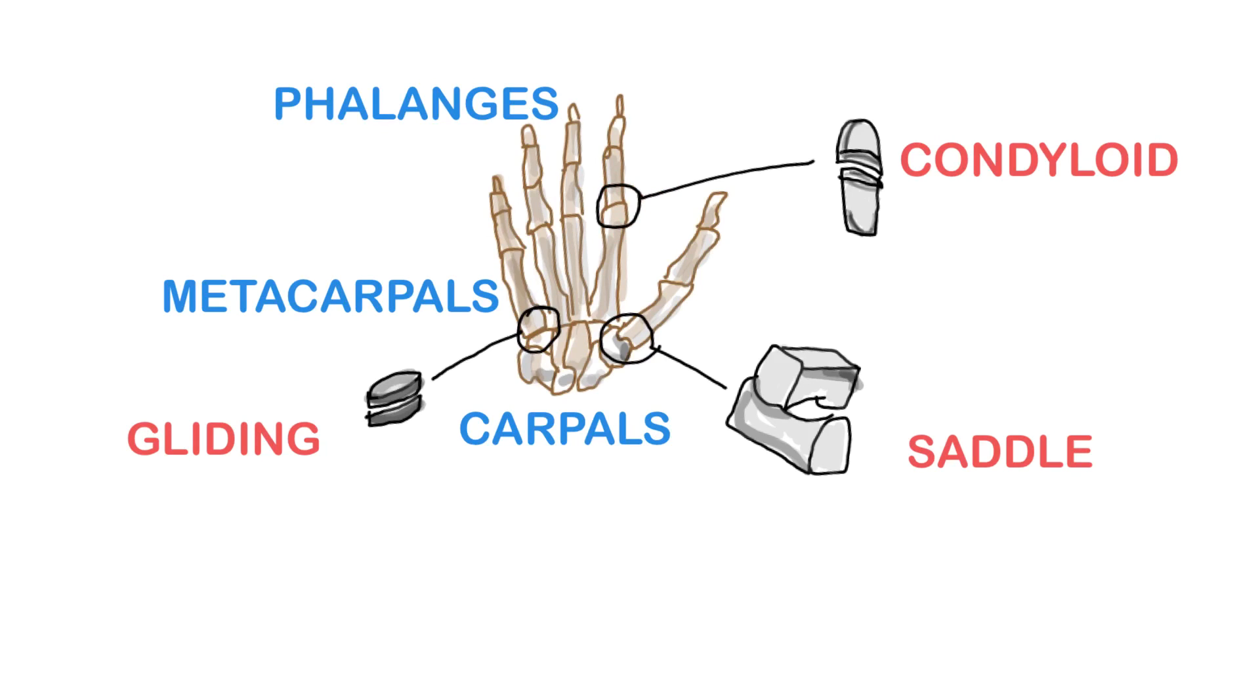Condyloid joints. Metacarpals or bones found in the palm of the hand, metatarsals or bones in the feet, as well as the phalanges or fingers and toe bones, connect to form condyloid joints. These joints are formed when an oval-shaped bone connects with the elliptical form of another to allow for flexion and extension, but no rotation.